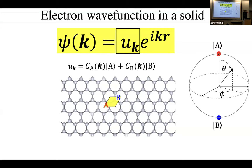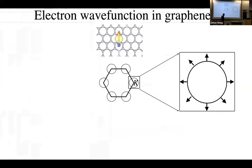For a fixed k, the electron wave propagates with a certain periodicity, but within the unit cell it's like a qubit — the electron chooses whether to occupy the A sublattice, the B sublattice, or any superposition. We can describe this on a Bloch sphere: the north pole is the pure A state, the south pole is pure B, and every point on the equator is a unique equal-weight superposition.